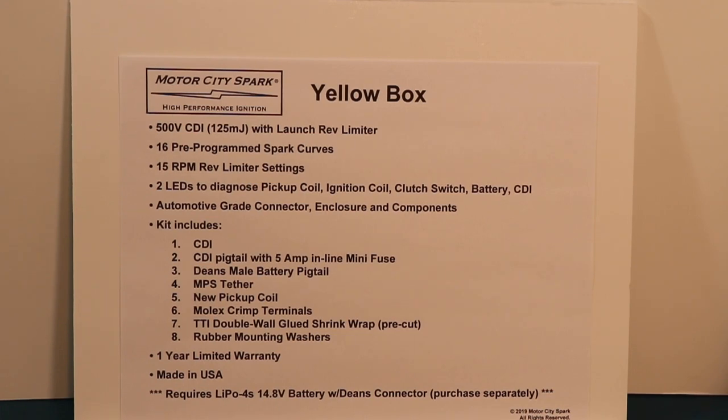The Yellow Box is a 500-volt CDI, 125 millijoules, with an internal launch rev limiter. It comes with 16 pre-programmed spark curves, 15 RPM rev limit settings, and two LEDs for status and diagnostics. It comes with automotive-grade quality components.